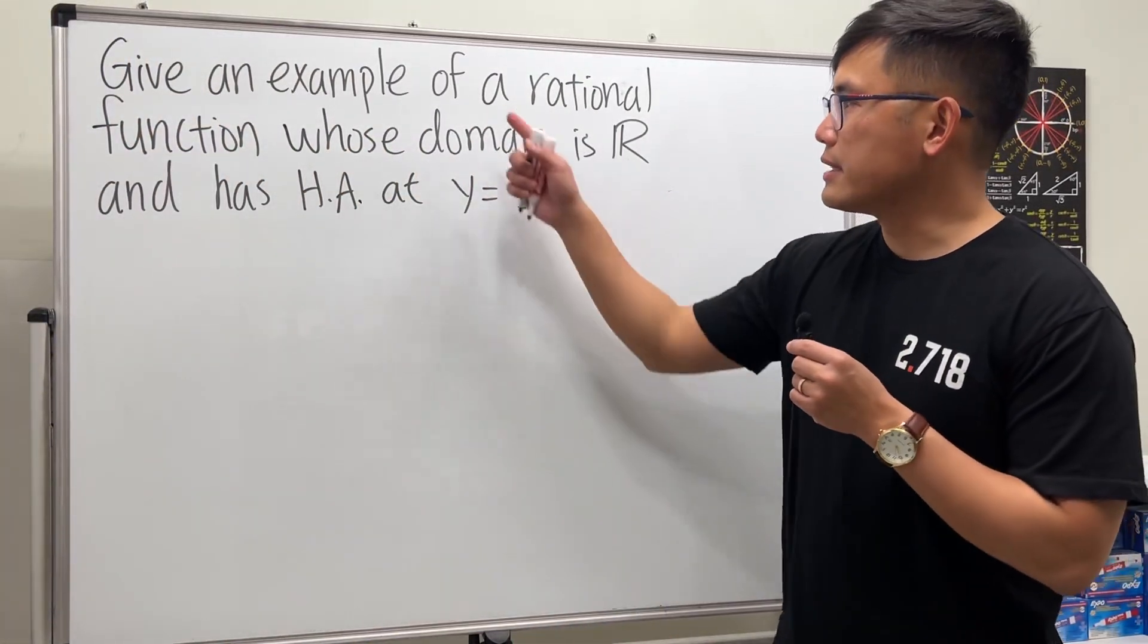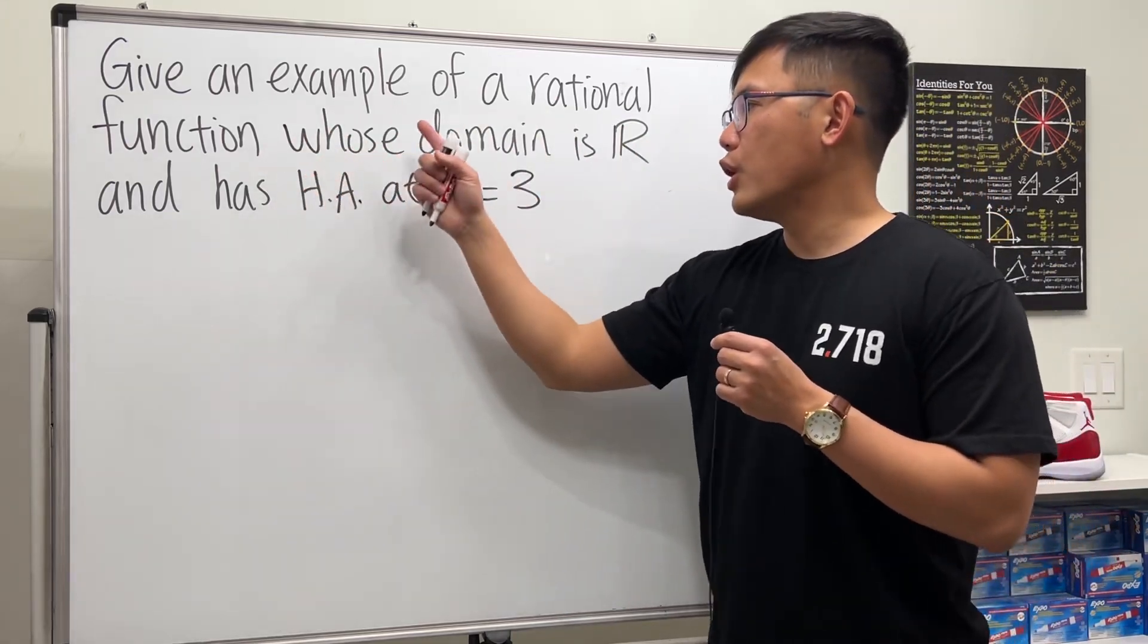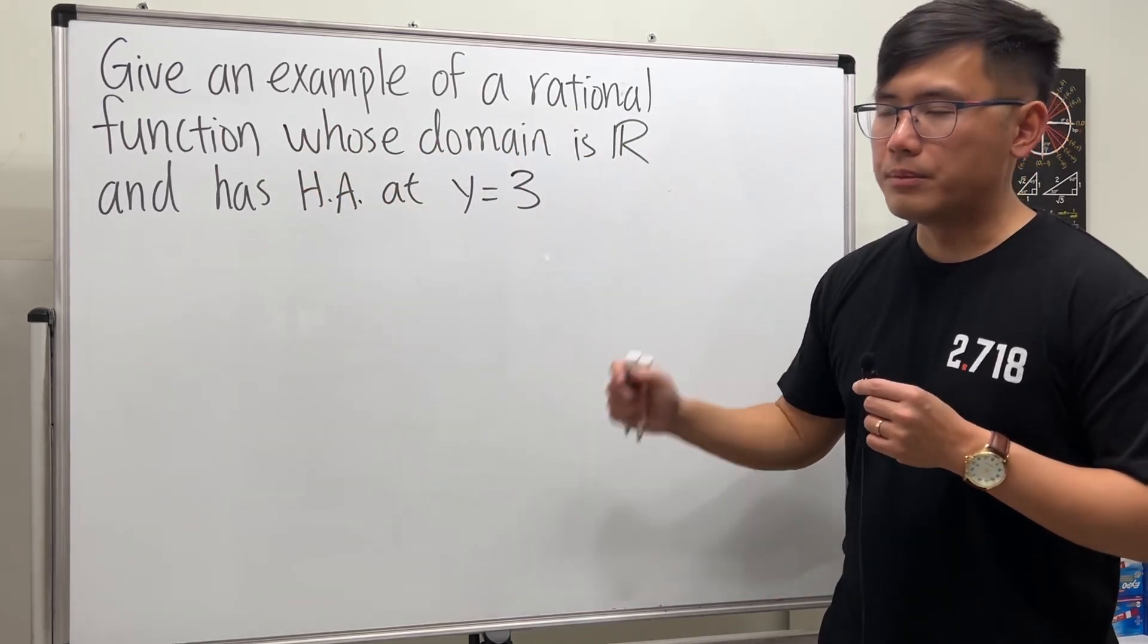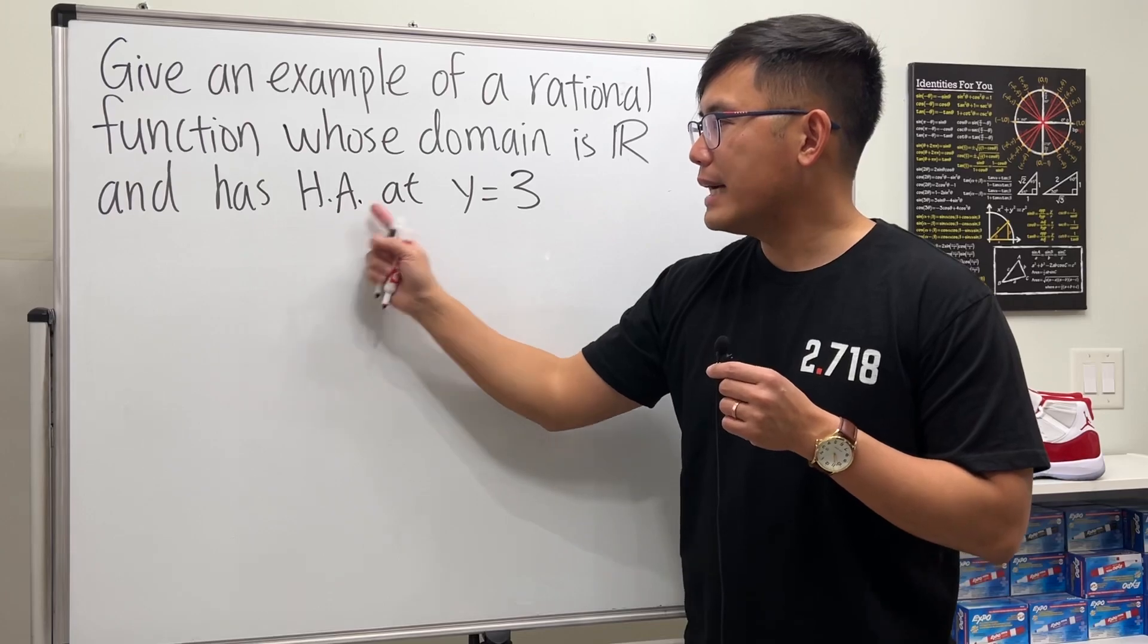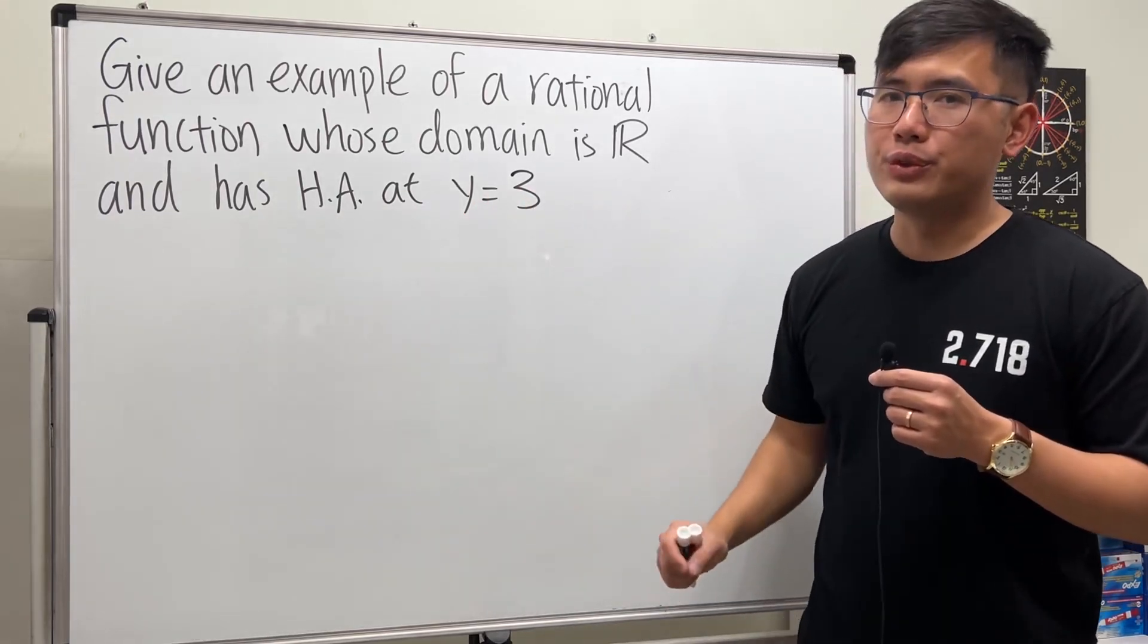Alright, here we are going to give an example of a rational function whose domain is the set of all real numbers and has a horizontal asymptote at y equals 3.